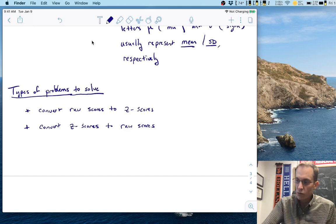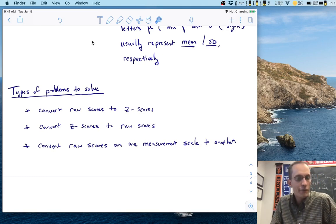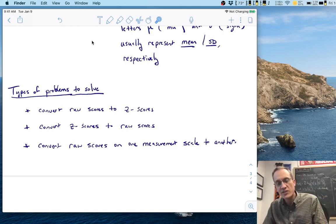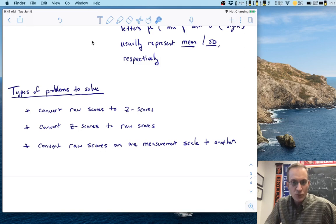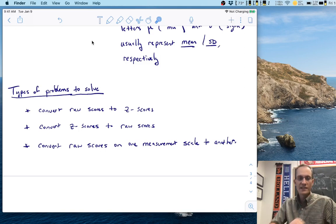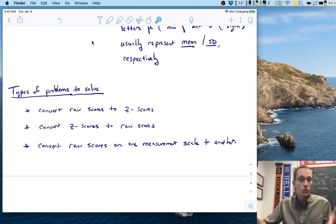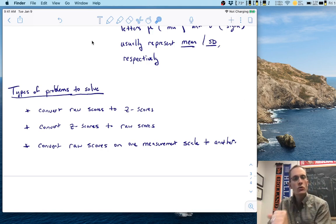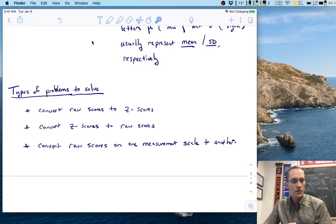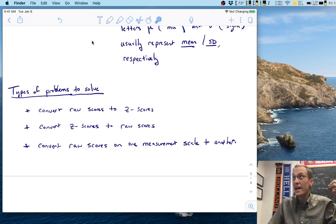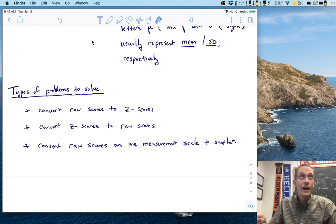So we'll convert raw scores to Z scores. We'll convert Z scores back to raw scores. And then finally, the last type of problem that we might want to be able to solve in our homeworks in this unit are to be able to convert raw scores on one measurement scale to another. Now, these require a little bit more work, but the trick is really simple. The trick is if you've got a raw score on one scale and you've got a raw score on the other scale, how do you go from one to the other? The trick is you use the Z score as an intermediary. So for example, if you know you've got a raw score of say 25, just picking one here on the ACT,